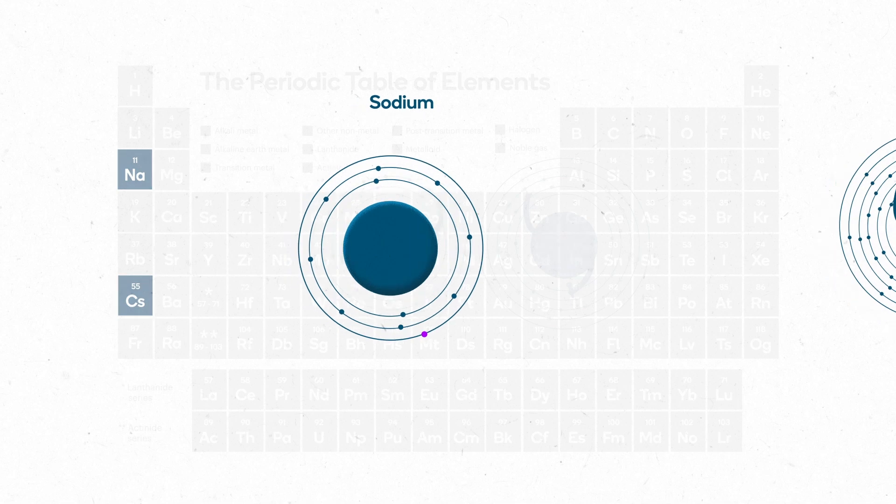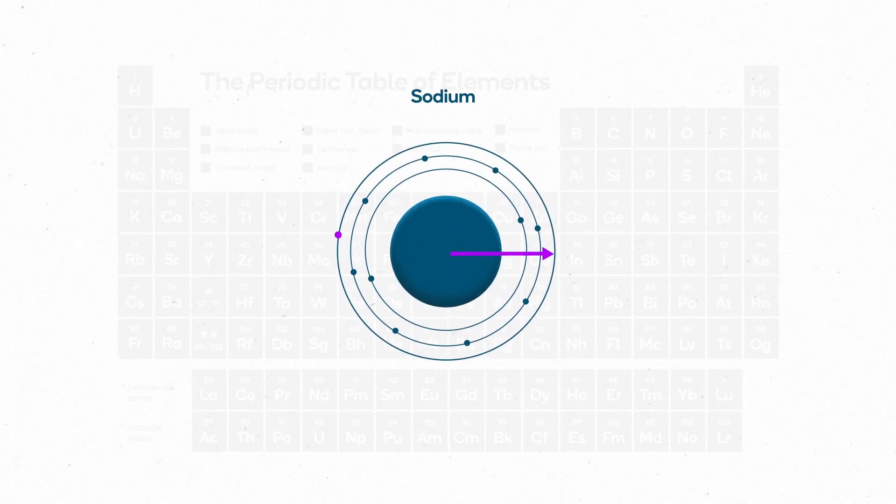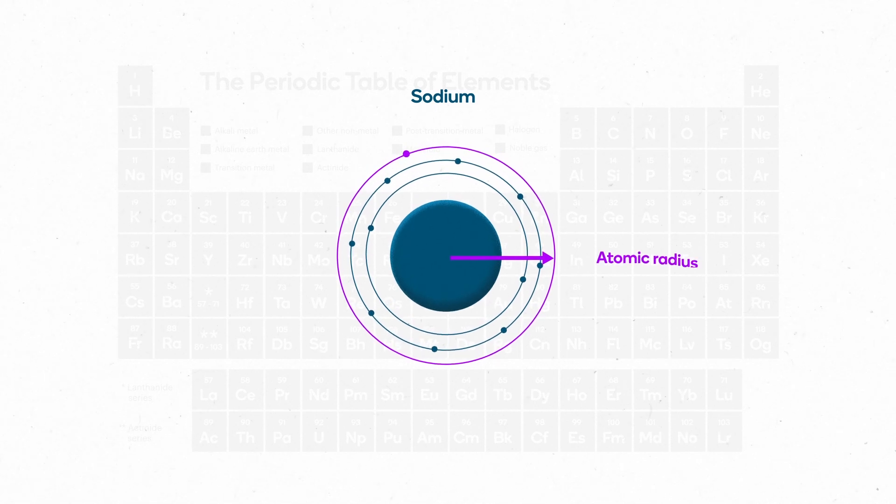Well, it has to do with the size of the atoms. The distance from the center of the nucleus to the outer shell is called the atomic radius.